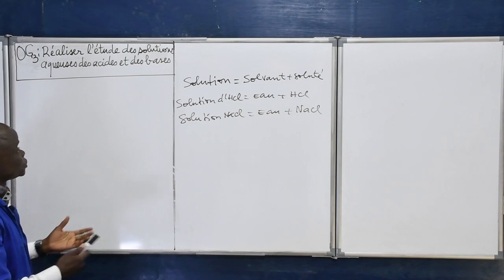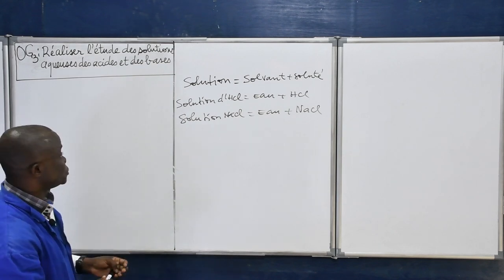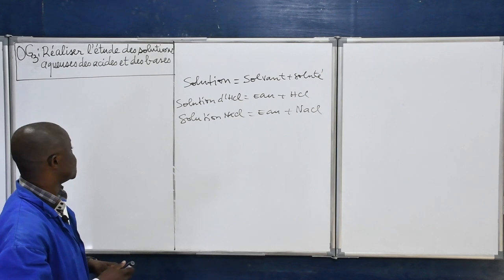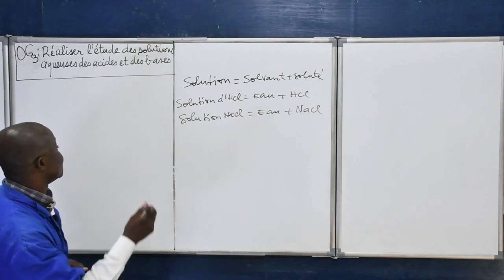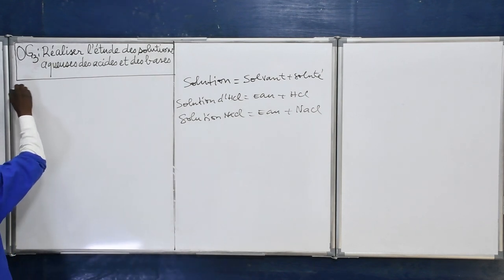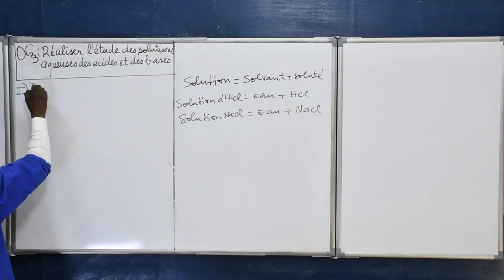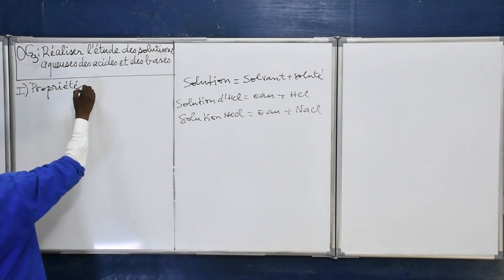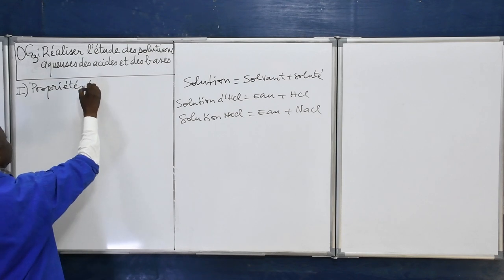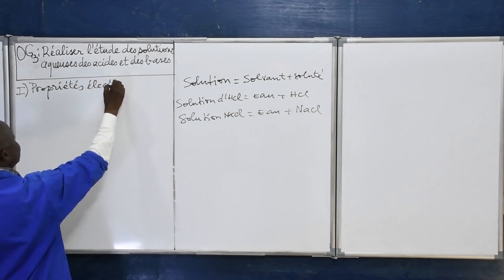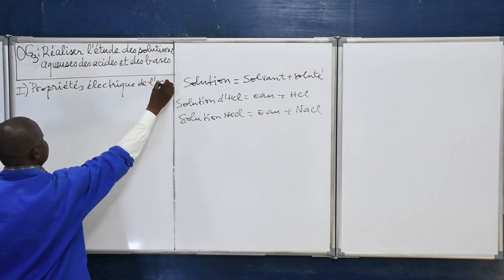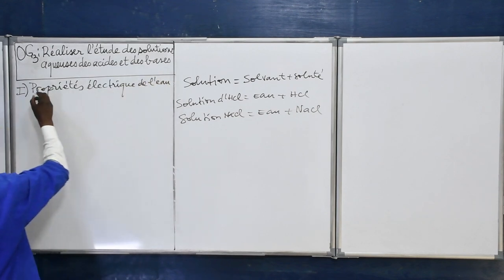Comme je l'ai dit tantôt, une solution aqueuse, c'est une solution entre l'eau et le solvant. L'eau est le solvant le plus utilisé en chimie. On va commencer par grand 1 : propriété électrique de l'eau.